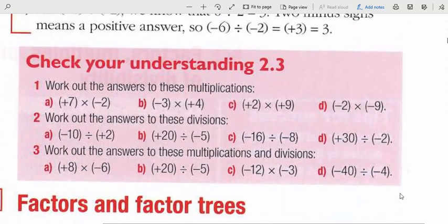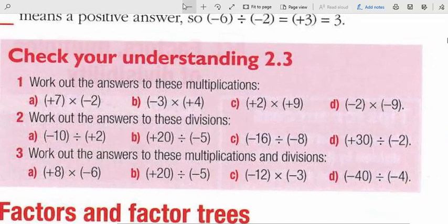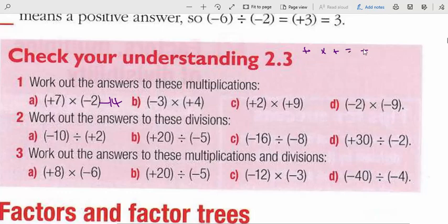Check your understanding 2.3 is about multiplying and dividing integer numbers. We multiply them normally — for example, 7 times 2 is 14 — but since we have positive times negative, the result will be negative. In multiplication and division: positive times positive is positive, and negative times negative is positive.